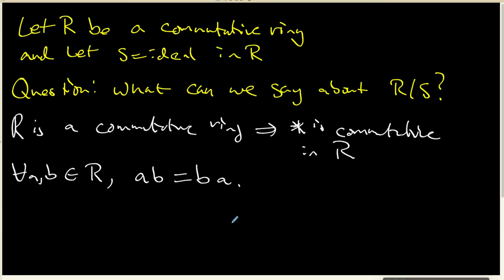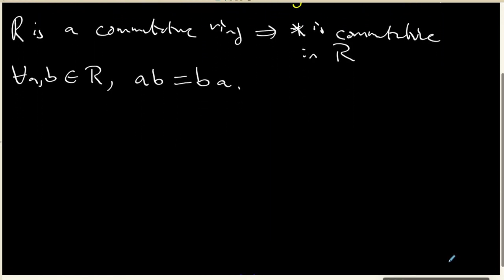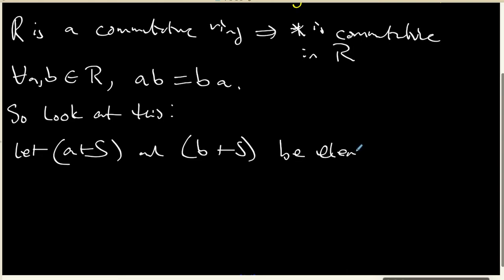Well, that actually is going to have a really important particular implication for the quotient ring. So look at this. Let's let A plus S and B plus S be any arbitrary elements inside the quotient ring.